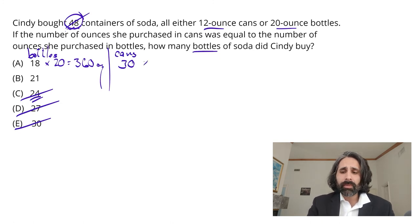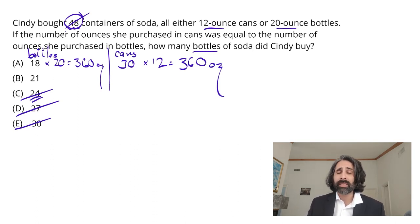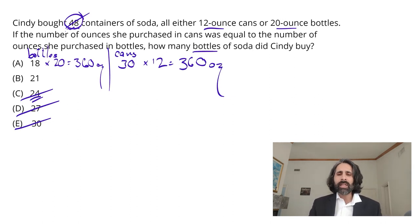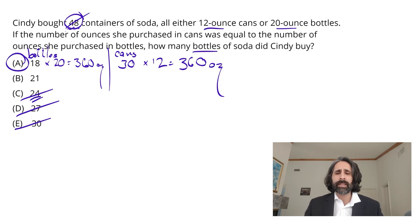In 18 bottles, if each one has 20 ounces in it, in total we're going to end up with 360 total ounces. That's fine, but we don't know if it's right yet because we need to do it on the can side. 30 cans, 12 ounces per can — and lo and behold, 360 ounces, almost as though the problem planned it that way. That is an equal number of ounces in bottles and cans. You've got to trust that's only going to happen for one answer choice, which means we have hit gold. We've got the right answer: A is the one, and we don't need to test anything else. Our work here is done.